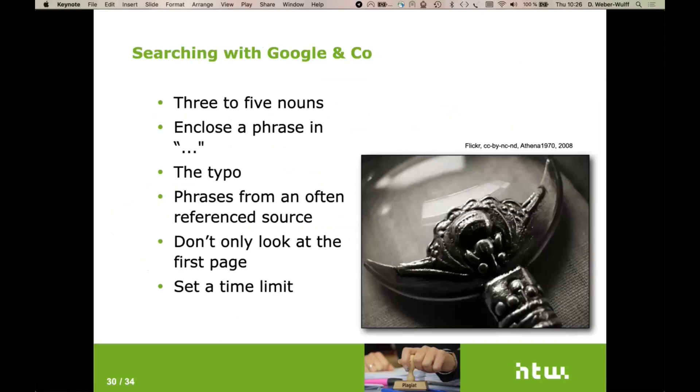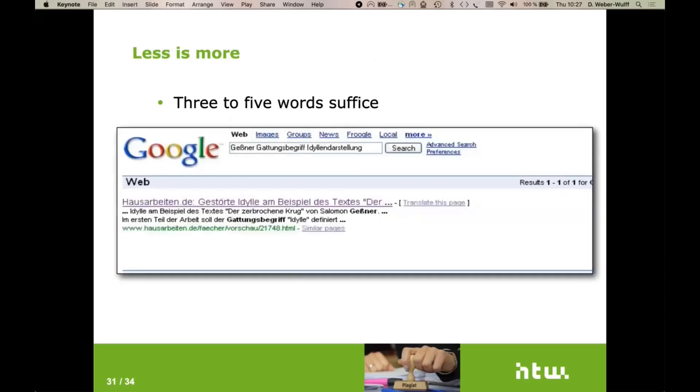How to find the plagiarism? All you need is three to five nouns or a phrase in quotation marks. The typo is your friend or phrases from an often reference sources. They reference it a lot. They may have taken it word for word from there. I don't just look at the first page and I set myself a time limit.